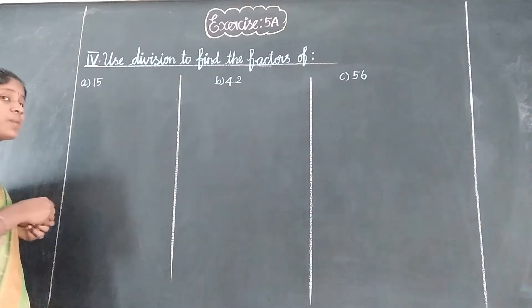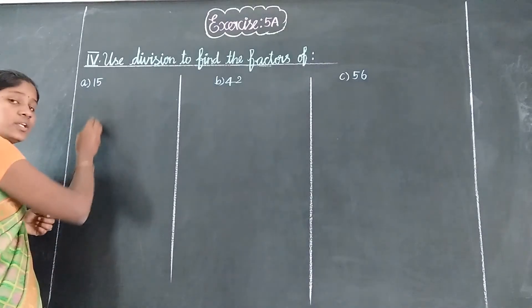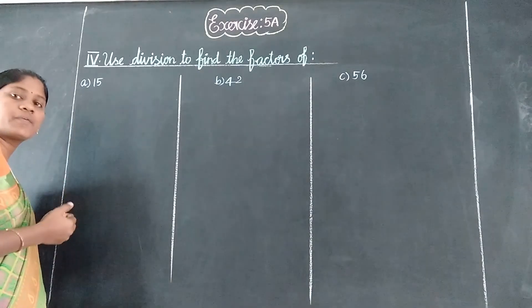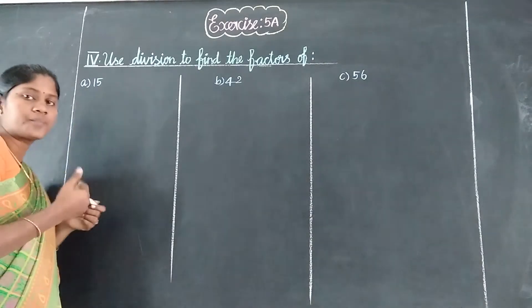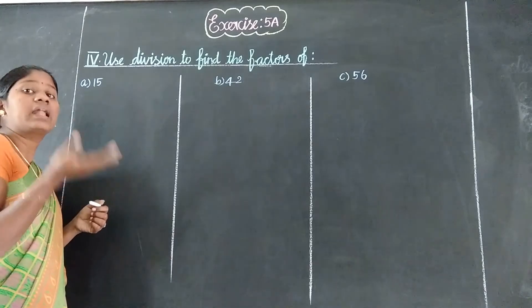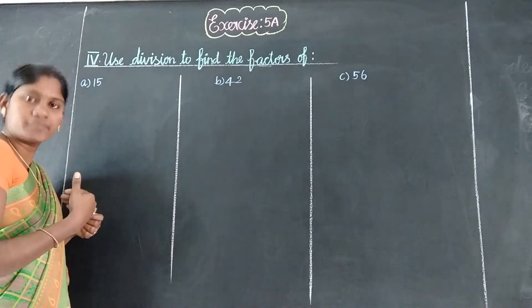First, we will get 1, 2, 3 — in order by table. 1 table, 2 tables, 3 tables. And between each next table, jump.